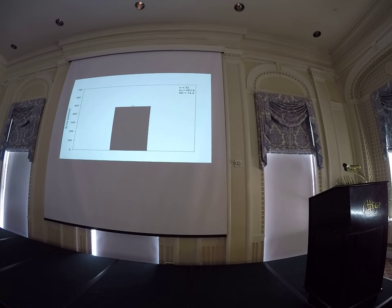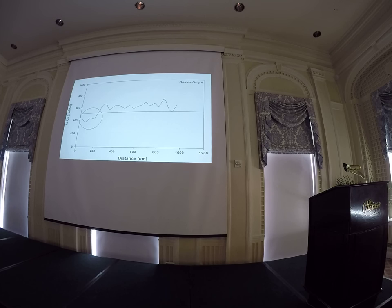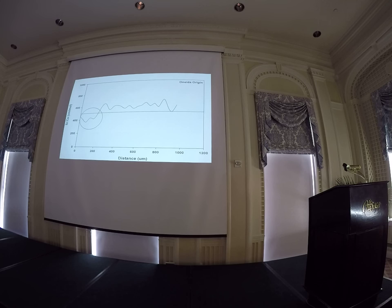Here is the mean strontium to calcium of the core of the hatchery-reared fish. We had 32 fish to make up this mean. The mean was 453 with a standard error of 14. This gives us our bounds or thresholds for what we would consider either a stocked or a wild fish. We decided to set 400 as the lower limit and 500 as the upper limit. Distance from core to edge is on the X-axis and strontium to calcium is on the Y-axis. The red circle is the core and the green line is the upper threshold for what we would consider a stocked fish.